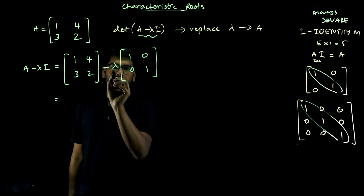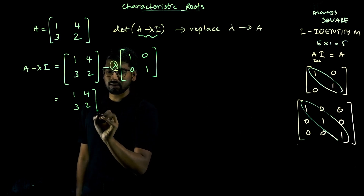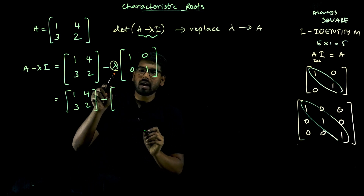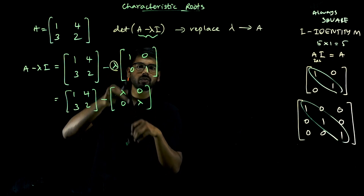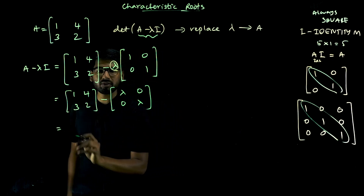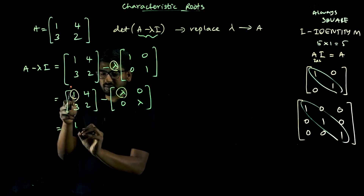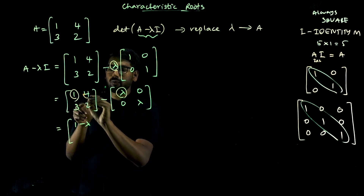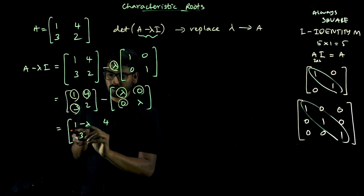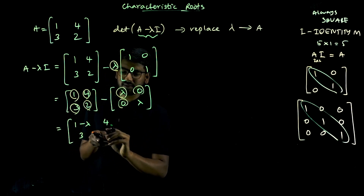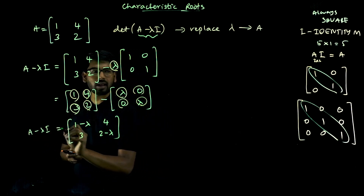We multiply the scalar lambda by the identity matrix. The result is: lambda times 1 is lambda, lambda times 0 is 0, lambda times 0 is 0, lambda times 1 is lambda. Now subtracting element by element: 1 minus lambda, 4 minus 0 is 4, 3 minus 0 is 3, 2 minus lambda. So A minus lambda I equals [[1 minus lambda, 4], [3, 2 minus lambda]].